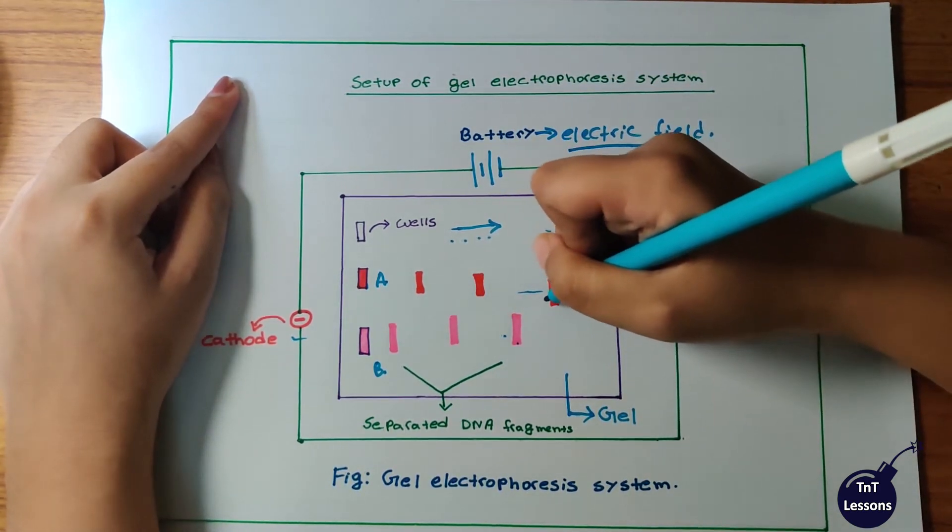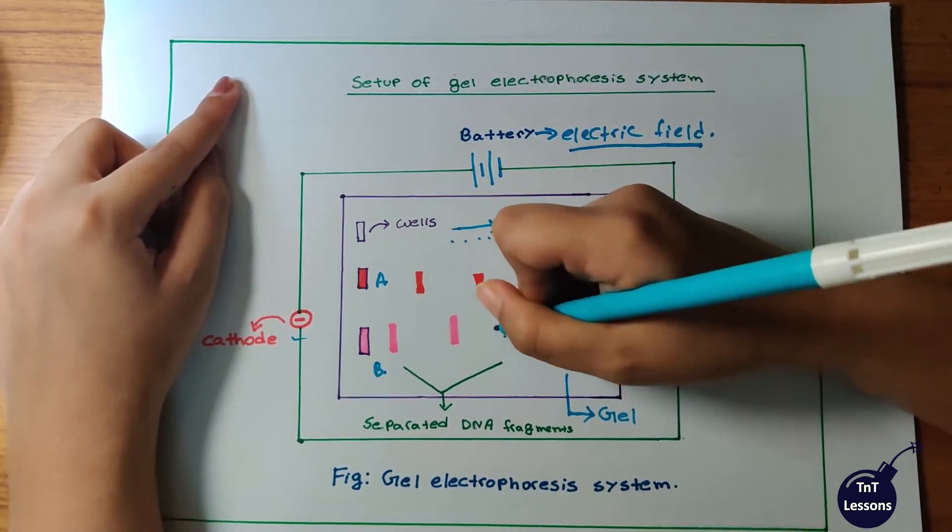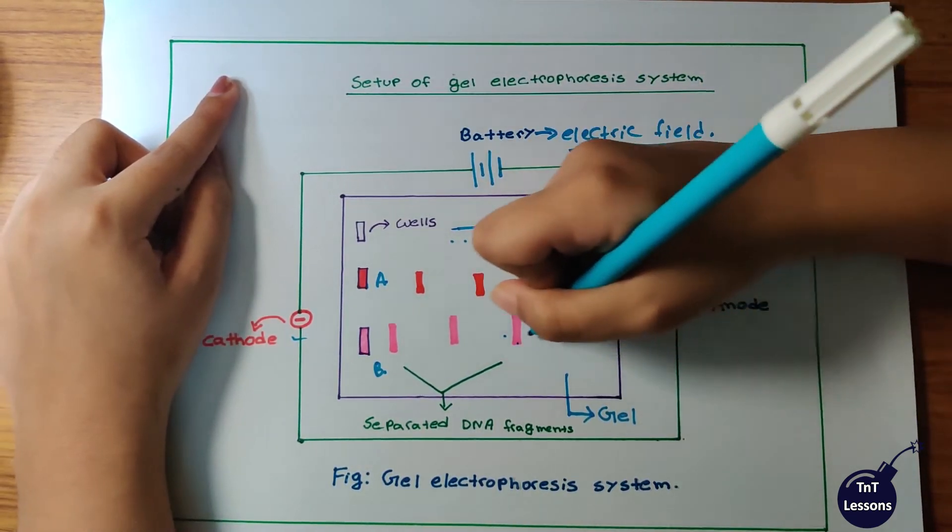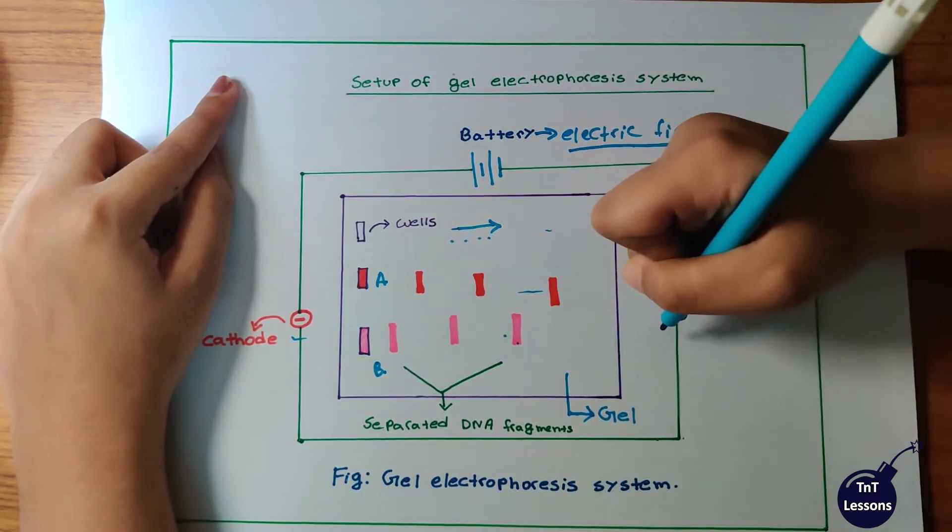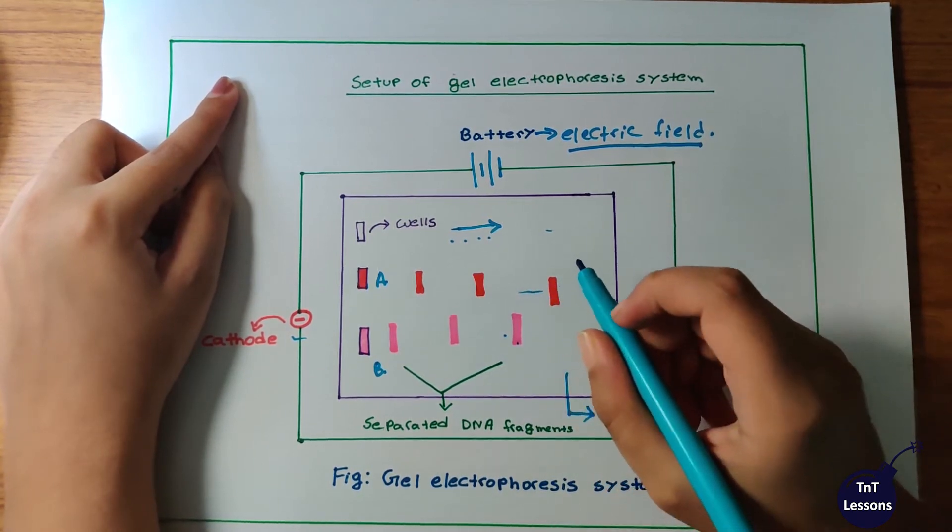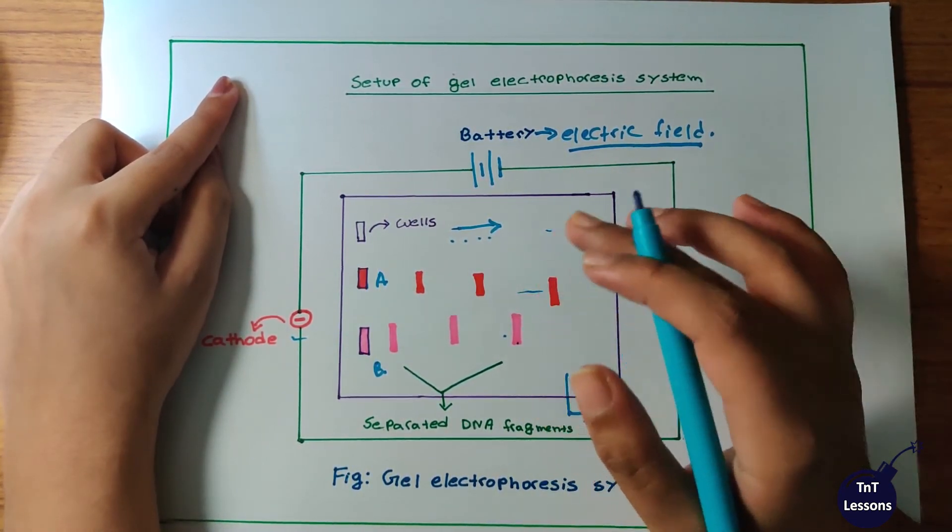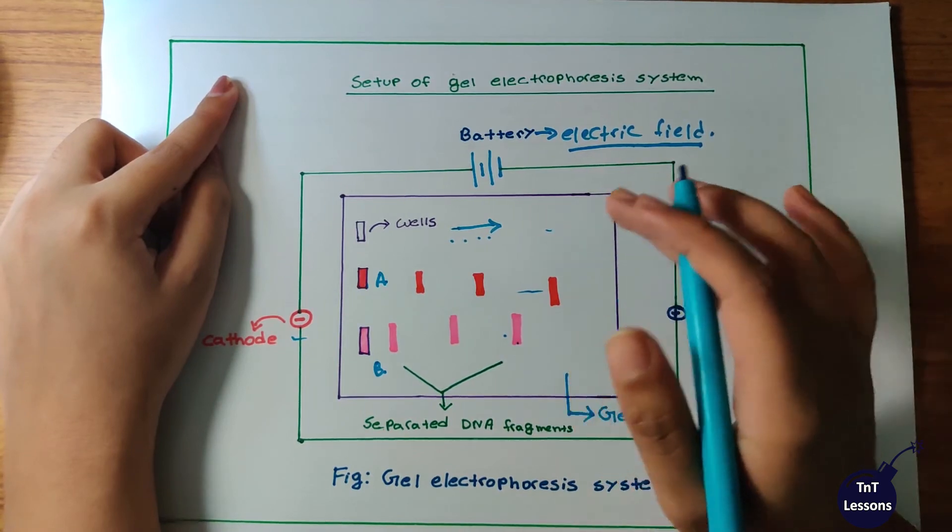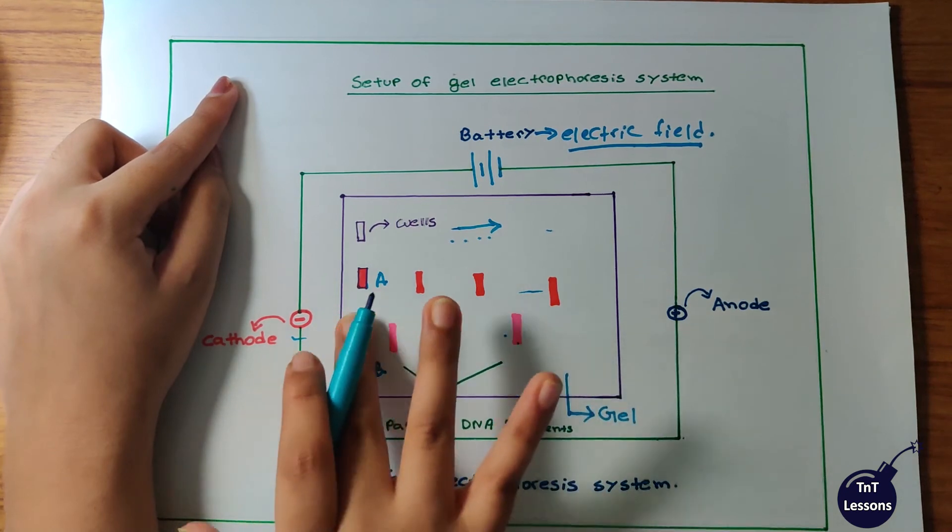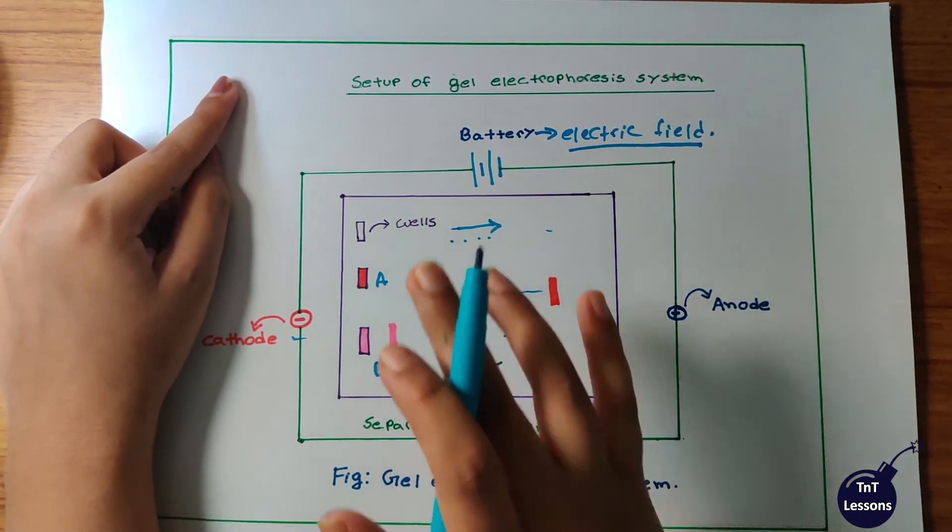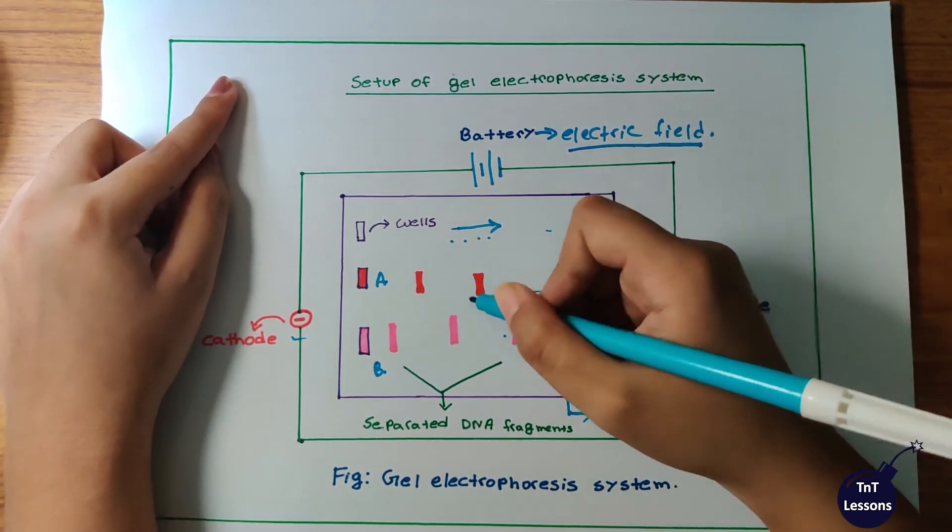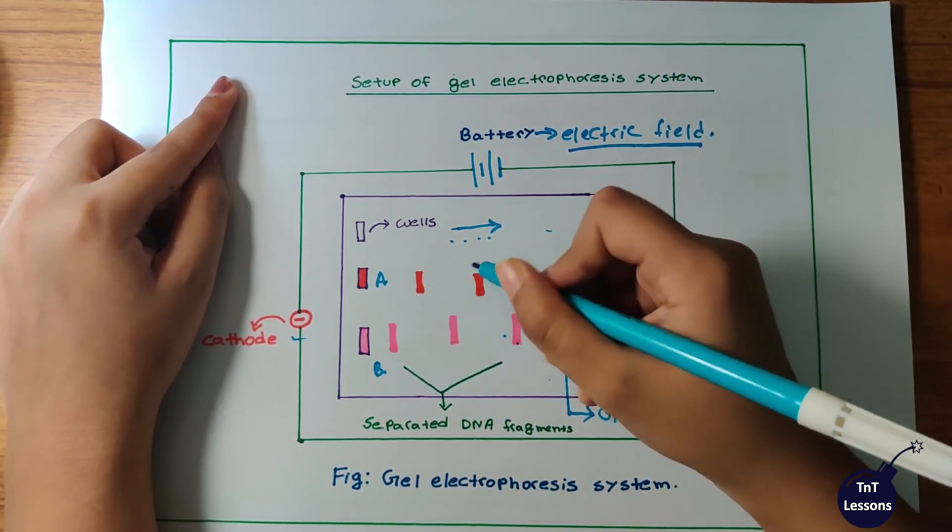We see smaller fragments and larger fragments. Smaller fragments move faster toward the anode. We determine the DNA fragment sizes with the help of DNA ladder, which is a molecular standard. We know the size of each fragment in base pairs.